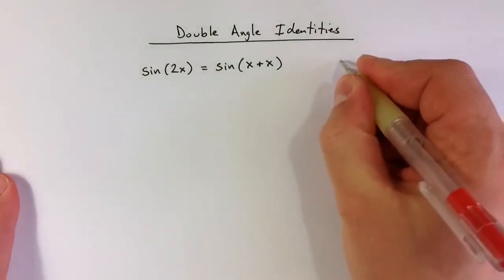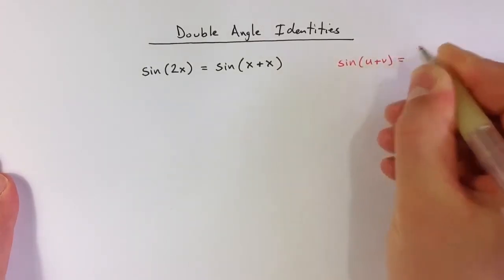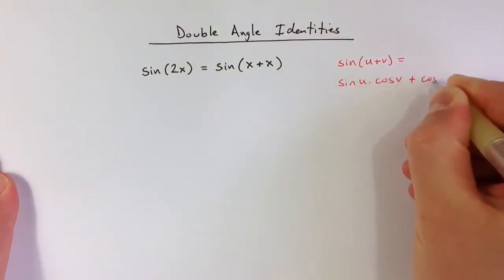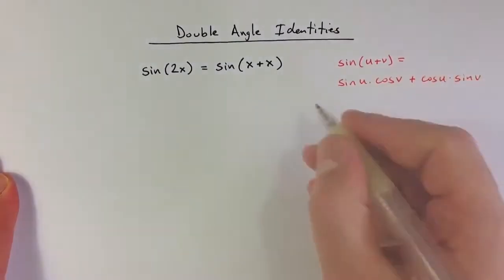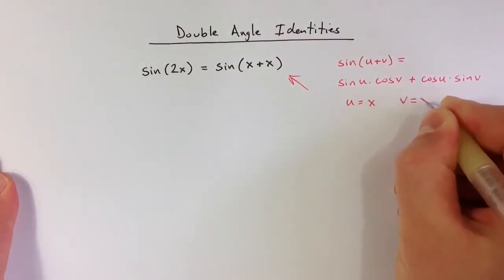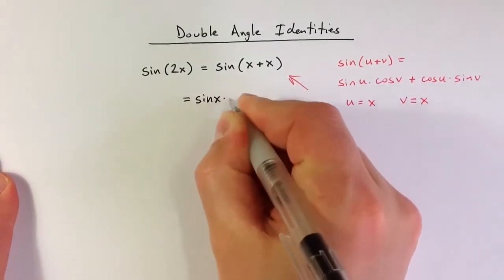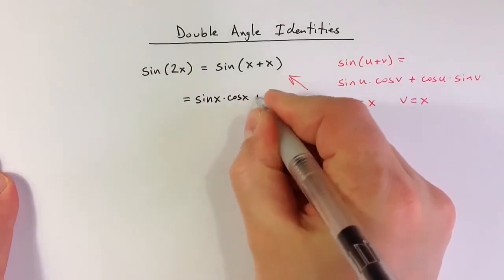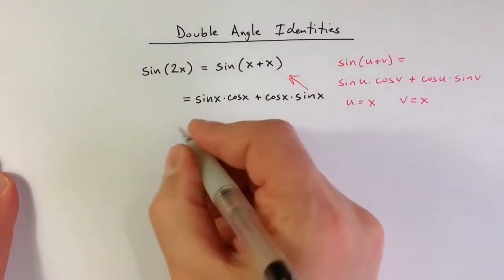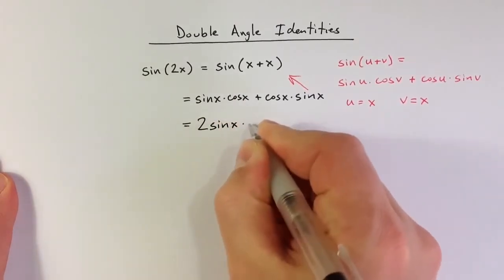This allows us to use the sum identity for sine: sine of u plus v equals sine of u times cosine of v plus cosine of u times sine of v. This expression suggests that both u and v equal x. From the sum identity, we get sine of x times cosine of x plus cosine of x times sine of x. But those two terms are really just the same thing, so we have 2 times sine of x times cosine of x.